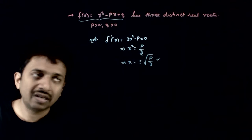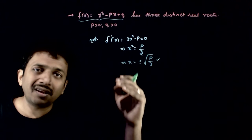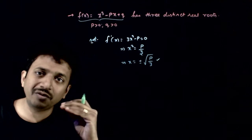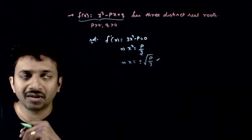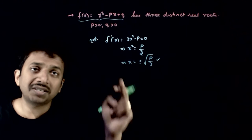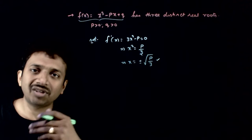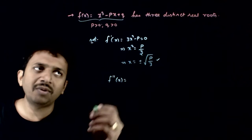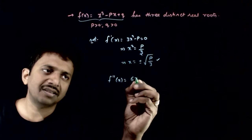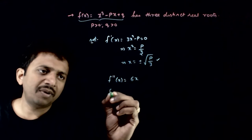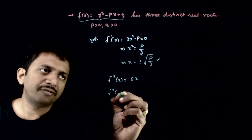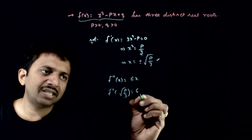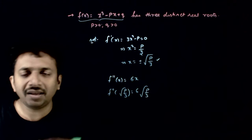Once you have these two critical points, you need to find which corresponds to maximum and which corresponds to minimum. To do that, you go for the double differentiation of f. f double dash of x is nothing but 6x. So f double dash of positive root p by 3 is nothing but 6 times root p by 3.